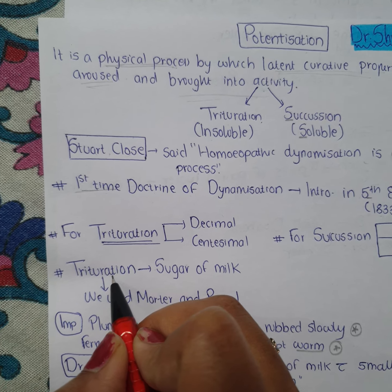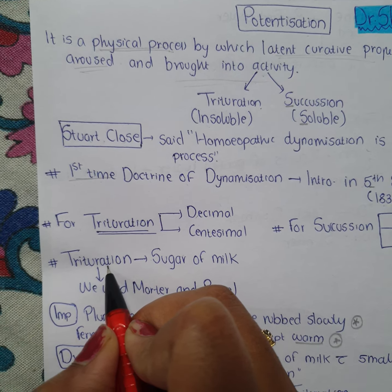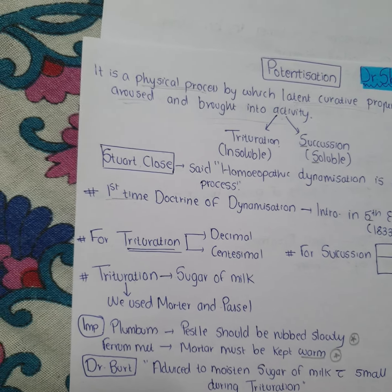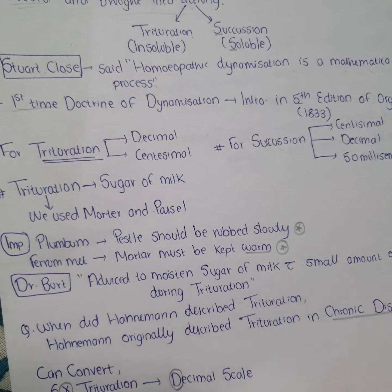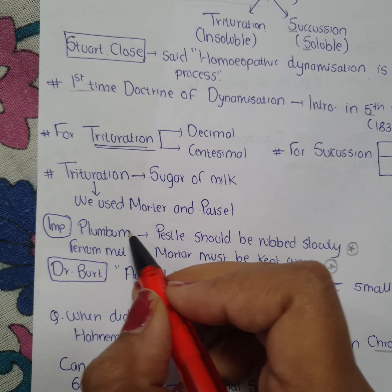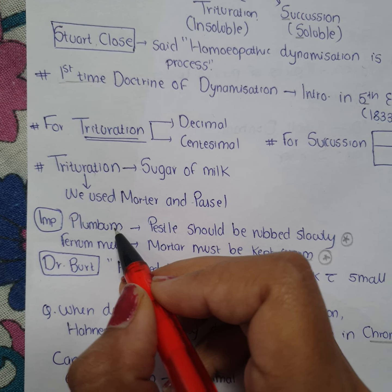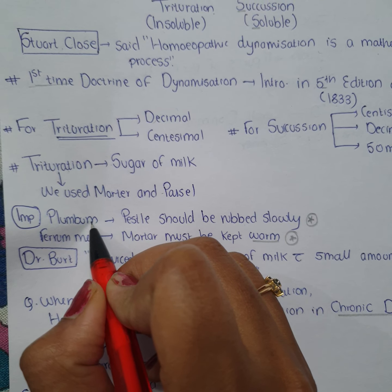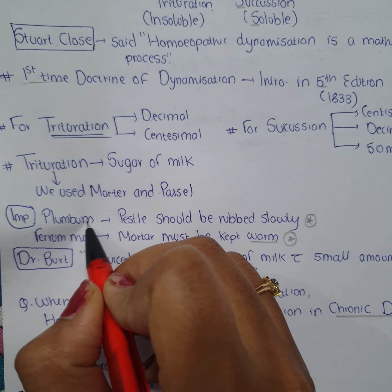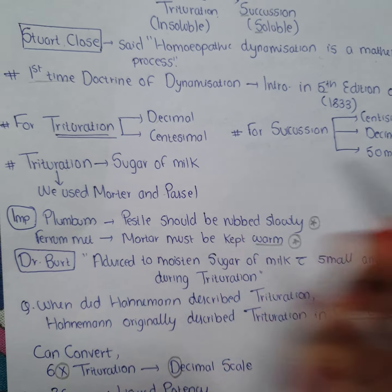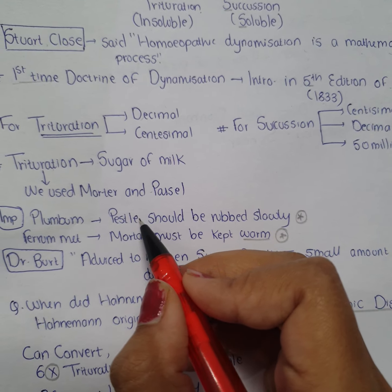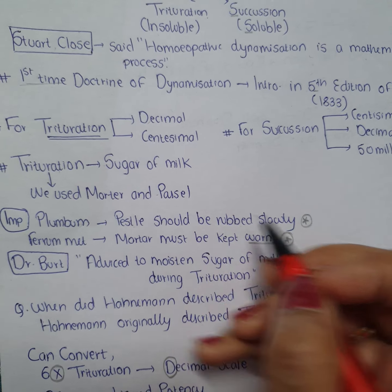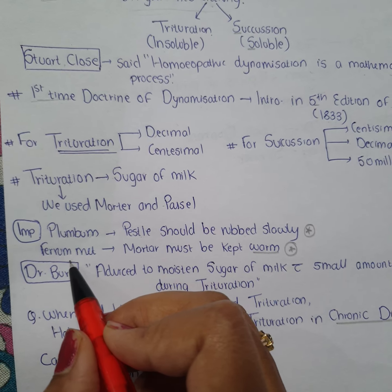Agar sugar of milk ko triturate karna hai toh we use mortar and pestle. This is a very important exam question: for Plumbum, the pestle should be rubbed slowly during the process of making the medicine.